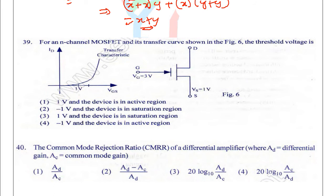For an N-channel MOSFET and its transfer curve shown in the figure, the threshold voltage is 1 volt. But we cannot say when the MOSFET is in active region or in saturation region, because threshold voltage is 1 volt.